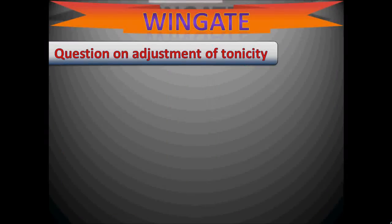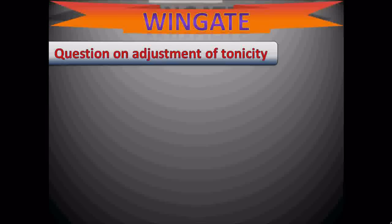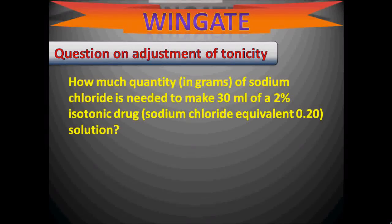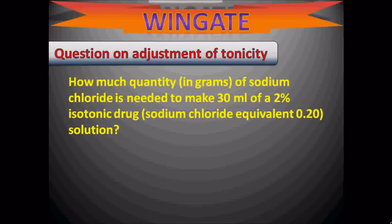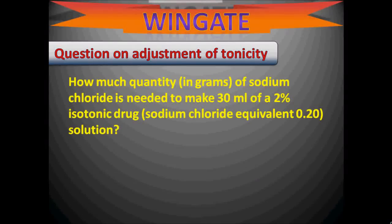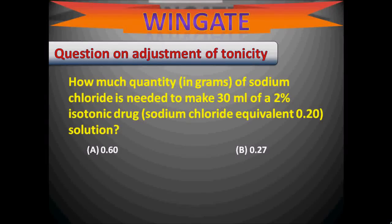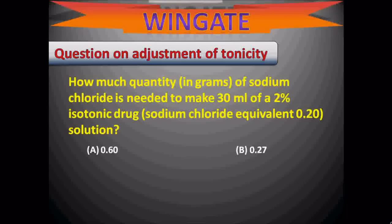Now let us go to the next question on adjustment of tonicity. How much sodium chloride is required to make 30 ml of a 2% isotonic solution, given that the sodium chloride equivalent is 0.20? Options: A: 0.60 g, B: 0.27 g, C: 0.15 g, D: 0.12 g.